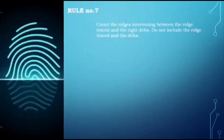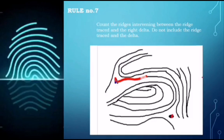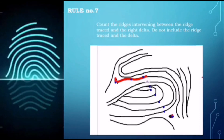Rule number seven: count the ridges intervening between the ridge trace and the right delta. Do not include the ridge trace itself or the delta. This is our ridge trace and this is our delta — we start counting from here: one, two, three, four, five, six, seven. So there are seven intervening ridges.